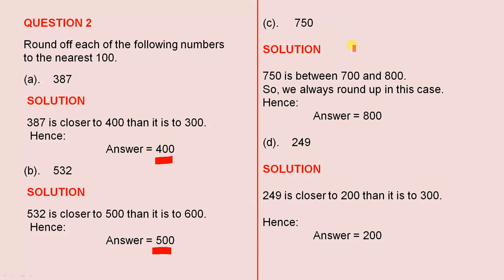750 is between 700 and 800, it's exactly halfway between. So when it's halfway between, we always round up. So 750 to the nearest 100 is 800.